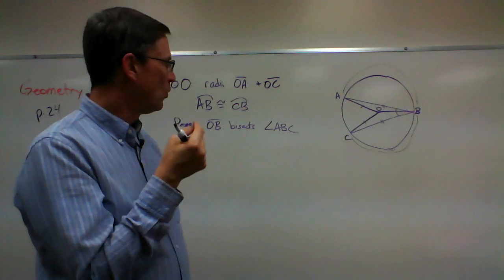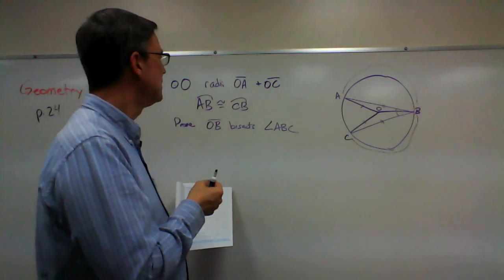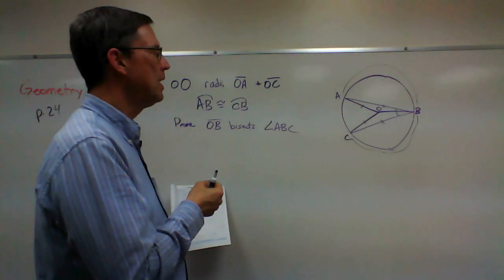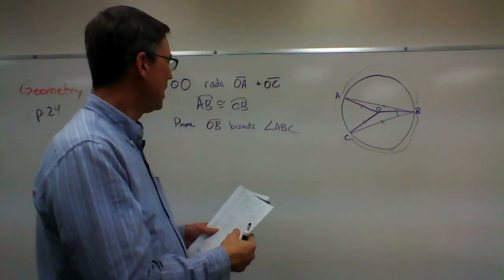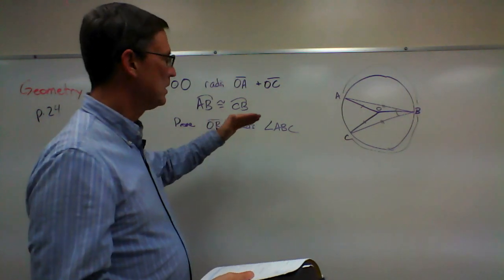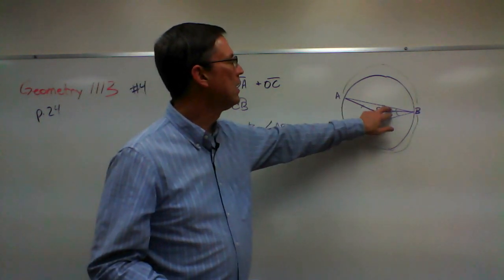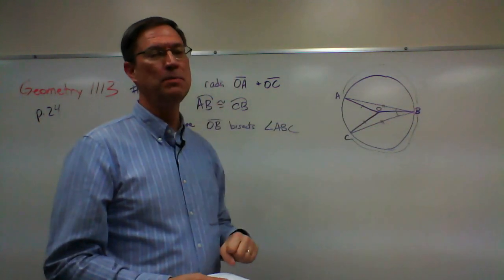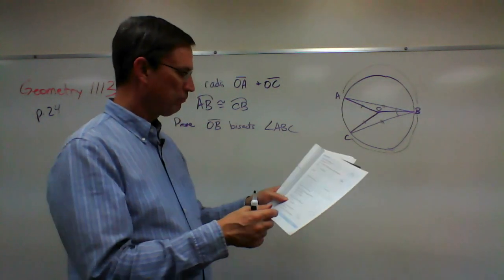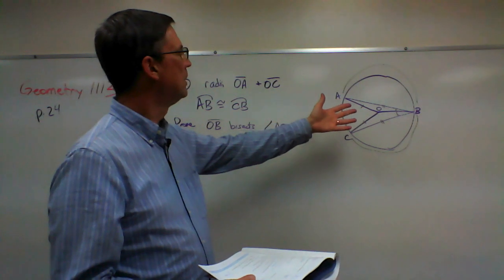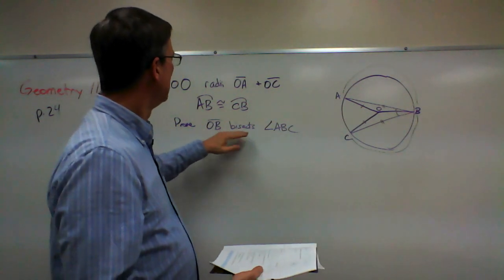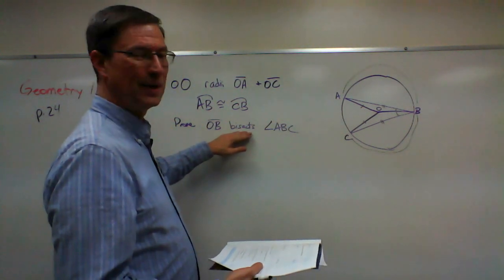If you want to come down to a statement that says that the triangle ABO is congruent to triangle CBO. And then you can make the conclusion that these two angles are congruent. CPCTC. And then finally, once you've done that, by definition, that's the definition of bisecting, right?